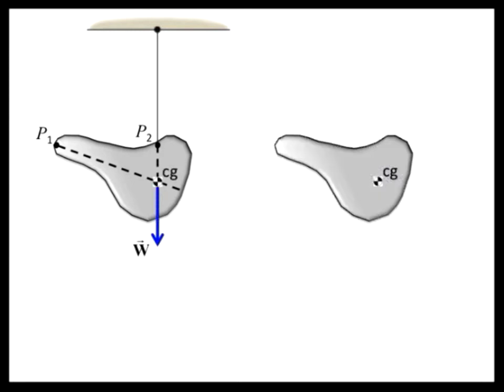If we drill a hole through the center of gravity, we can place the object on an axis, and it will be in dynamic equilibrium in any orientation.